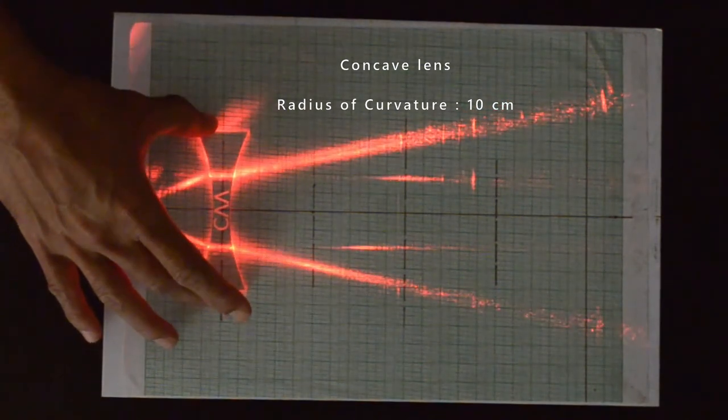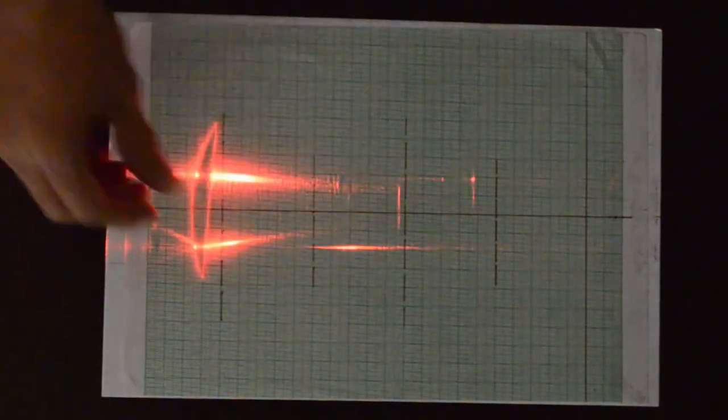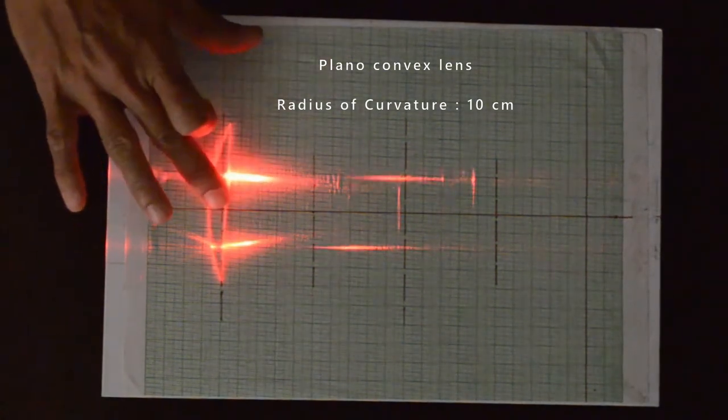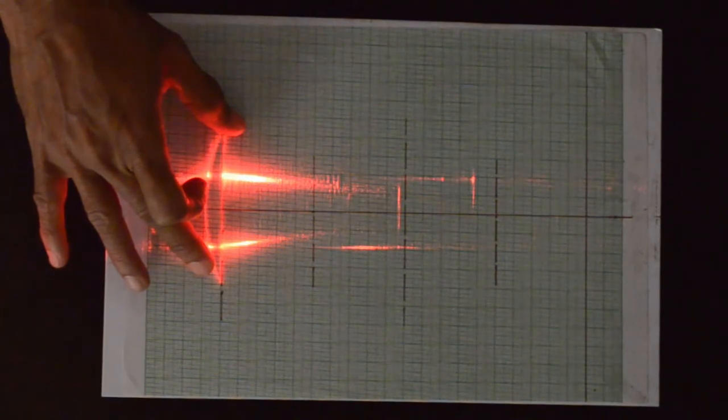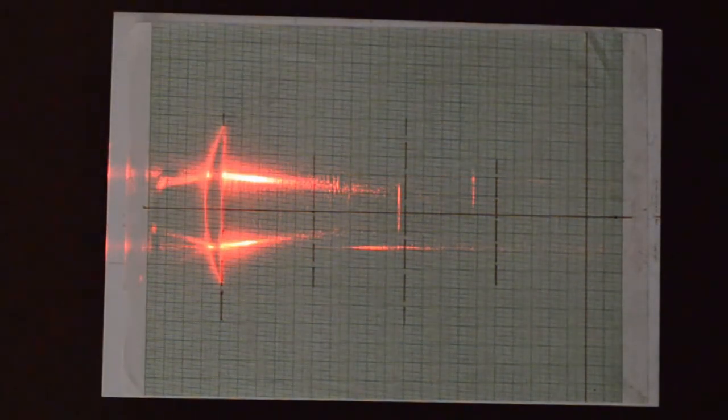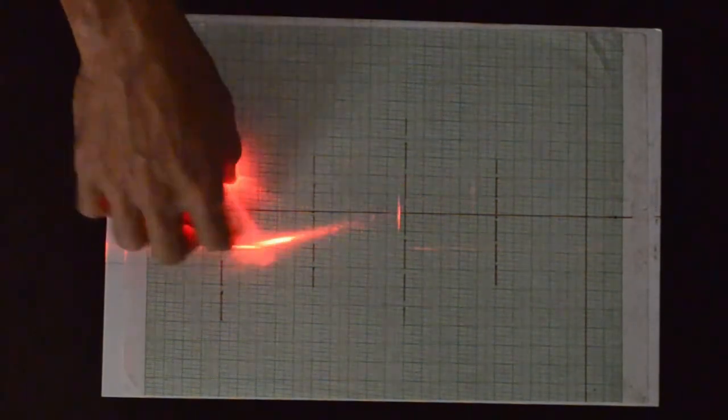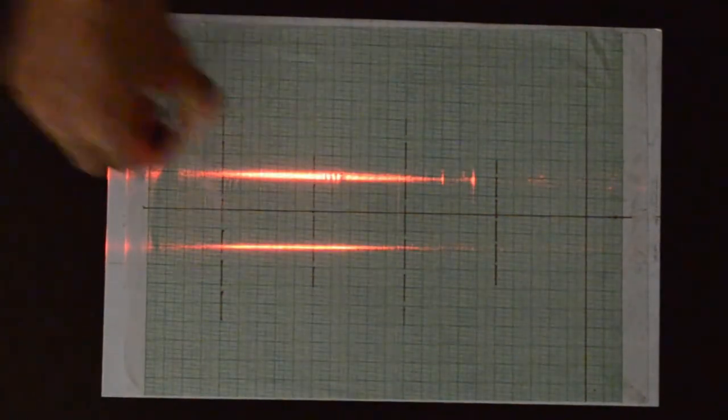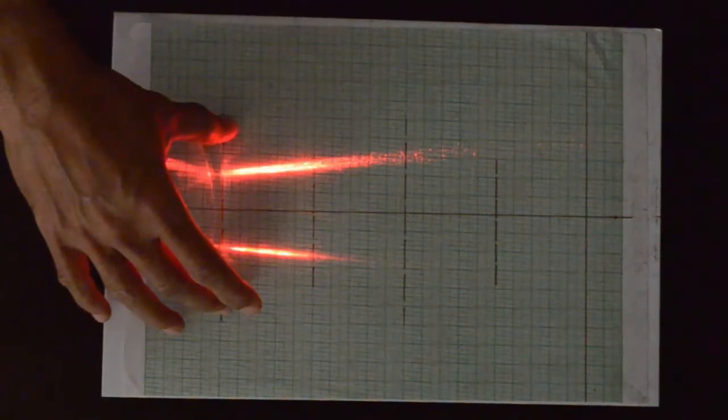This is a plano-convex lens. Acrylic lenses in these forms are a good way to visualize the ray paths in lenses. And this is a plano-concave lens.